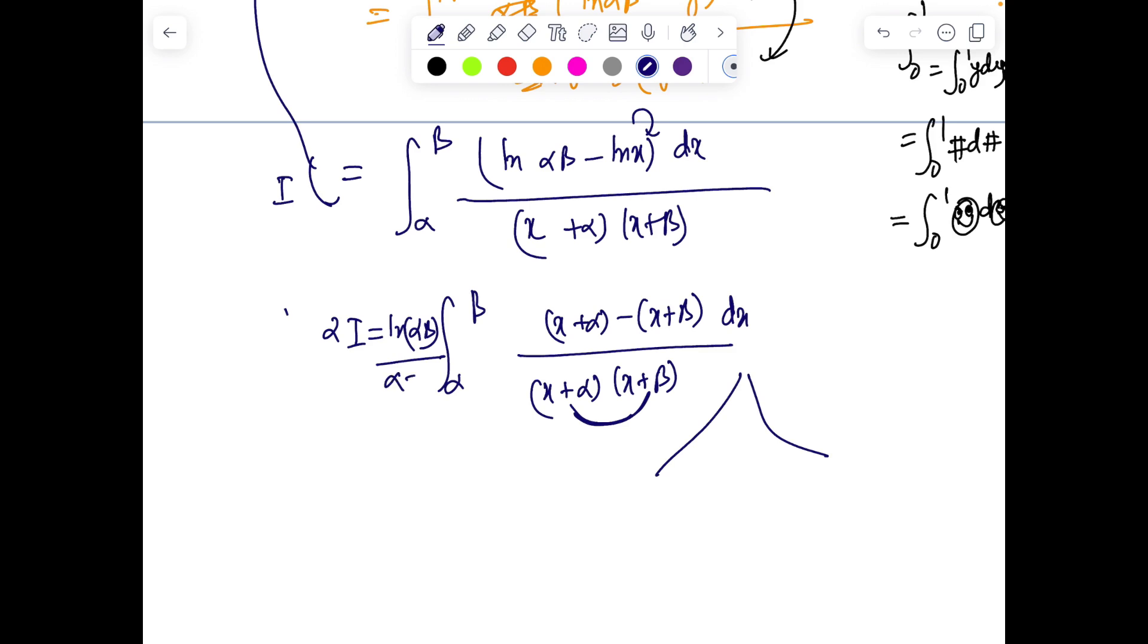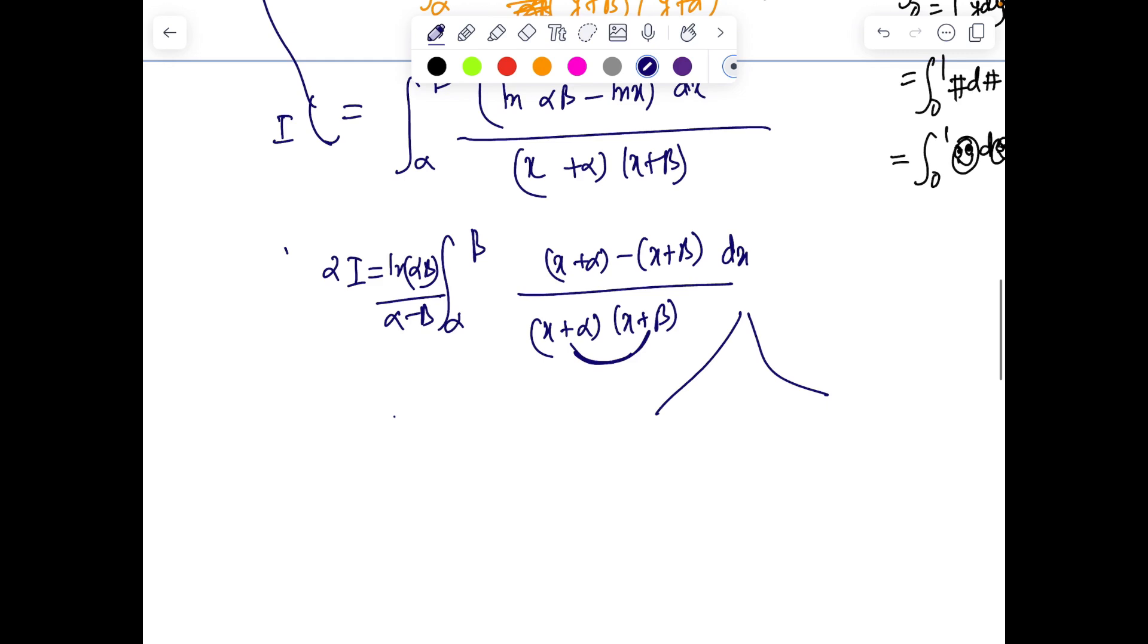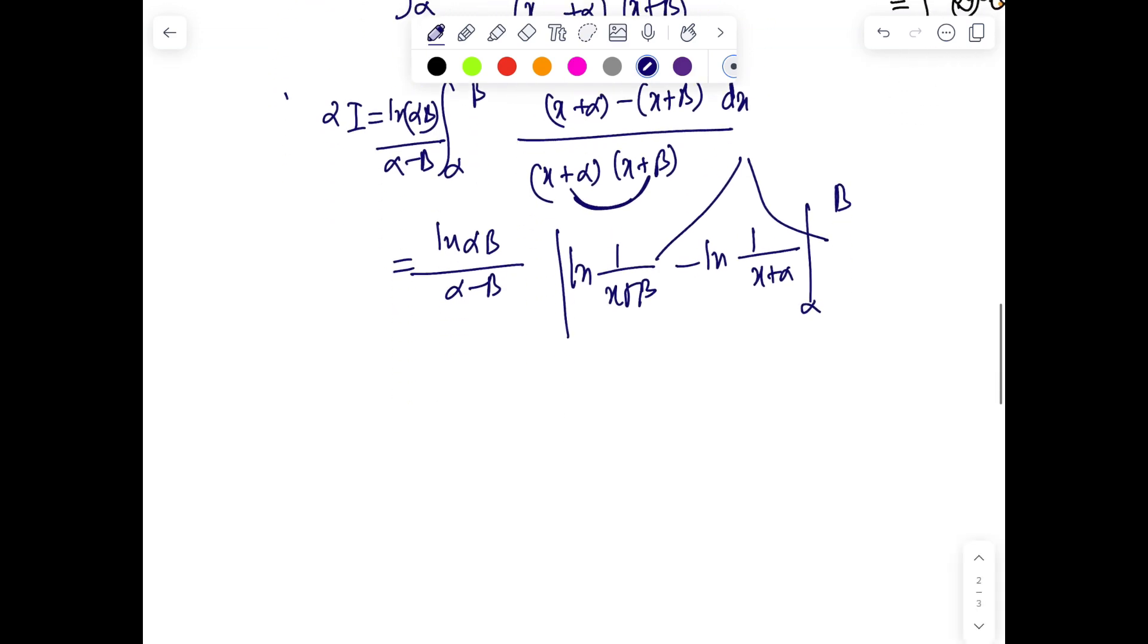We incorporate (α - β), so we can break this into 1/(x + α) minus 1/(x + β). That will give us (α - β) in the picture, so we are left with ln(αβ)/(α - β) times [ln(1/(x + β)) - ln(1/(x + α))] evaluated from α to β.